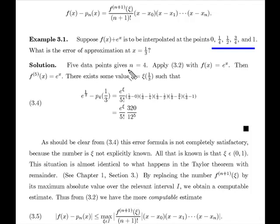So we apply the error formula directly, and in this case, n is four because we go from x naught to x4, and that'll be five points. So in this particular situation, the fifth derivative, which is the derivative we want, that's n plus 1, is 5, is e to the x.